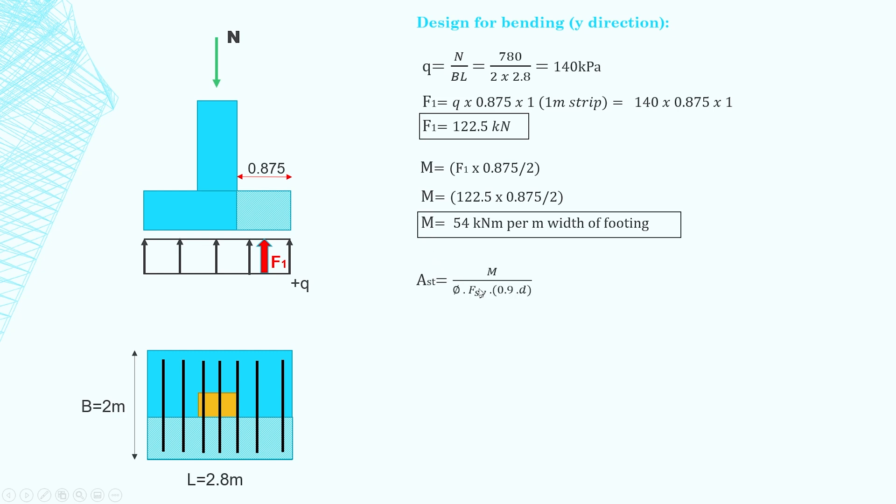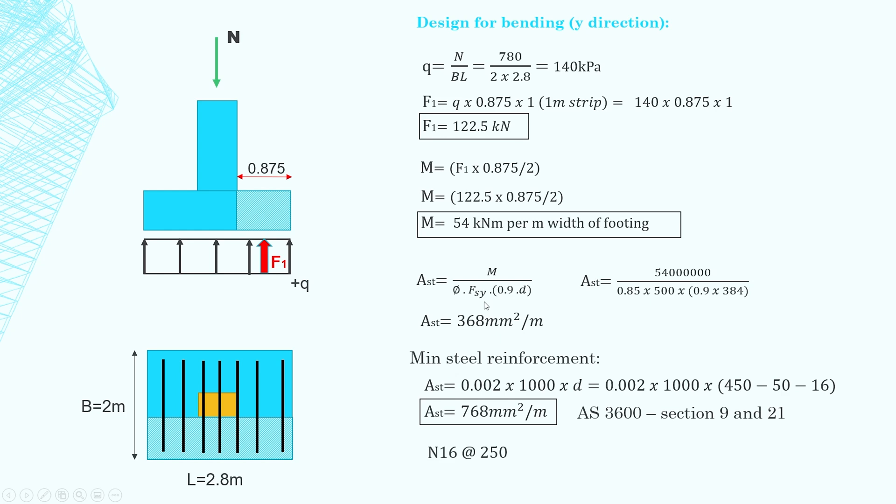So we do the same process to find the required steel reinforcement. Obviously my minimum steel reinforcement will govern as calculated previously. And we need again N16 at 250 centers.